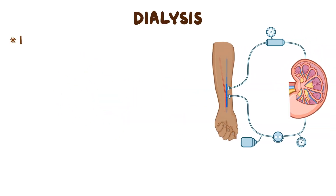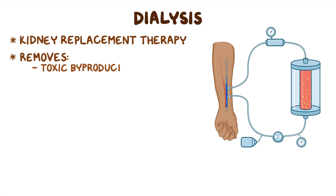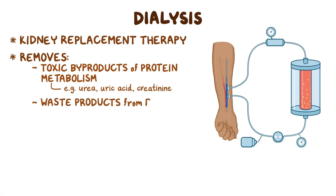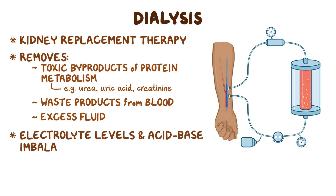Dialysis is a type of kidney replacement therapy that removes toxic byproducts of protein metabolism like urea, uric acid, and creatinine, as well as waste products and excess fluid from the blood. Additionally, through dialysis, electrolyte levels and acid-base imbalances can be corrected.